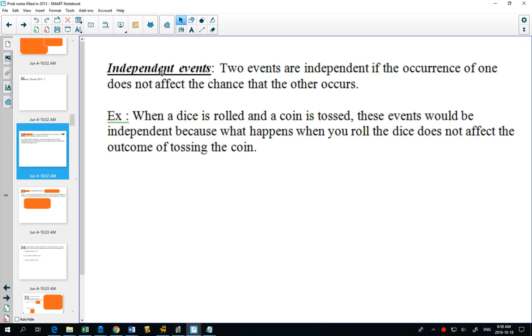So when a dice is rolled and a coin is tossed, these events would be independent, because one doesn't affect the other.